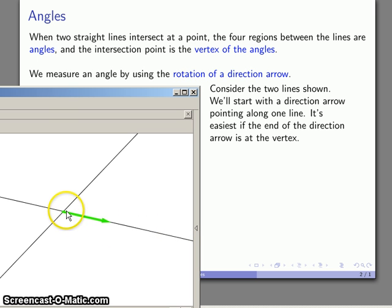And the line points in two directions. It points this way. It could also point this way. But if we want to measure this angle here, we're going to start off by having the direction arrow point along the direction of one leg of this angle that's formed by the two lines.